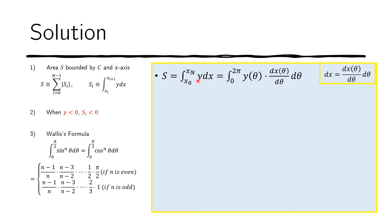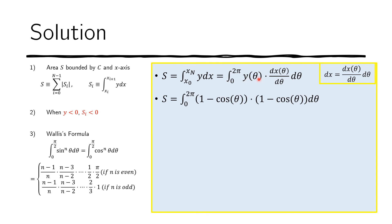For y, it's easy because we already have y(θ). For dx, we use dx = (dx/dθ) dθ — the derivative of x with respect to θ times the differential dθ. So we replace dx with this expression, and now the whole integral is in terms of θ with limits 0 to 2π. We substitute y(θ) and dx/dθ with the given expressions, multiply, and get our expanded integrand.